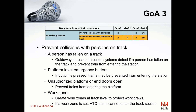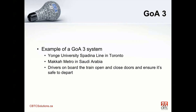An example of a GOA 3 system: in Toronto we have the Yonge-University-Spadina line, and in Saudi Arabia there is the Mecca Metro — two systems that I worked with and am familiar with. Both systems have drivers on the train. In Toronto in particular, the driver sits in the back, and when the train comes into a station they poke their head out, look down the line to make sure passengers have disembarked or boarded, close the doors, and then push the ATO button to allow the train to leave. That's a GOA 3 type of system, and there are many of these around the world.